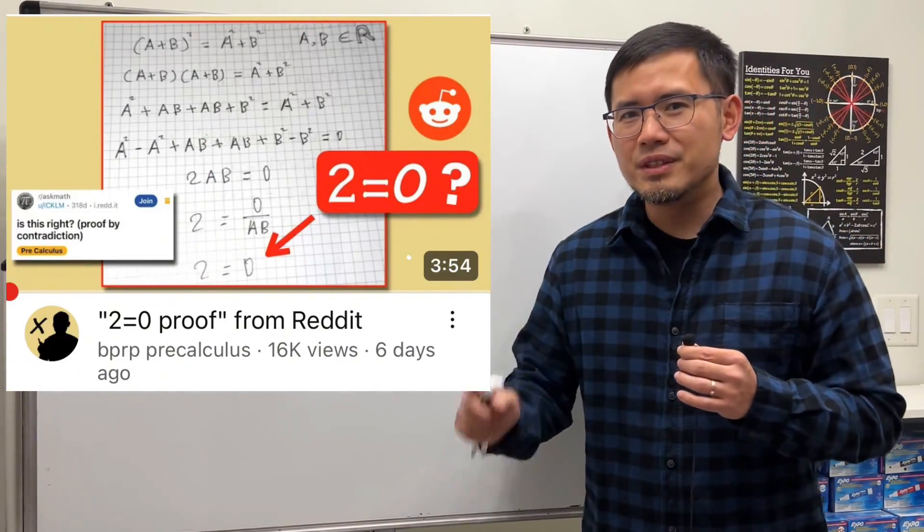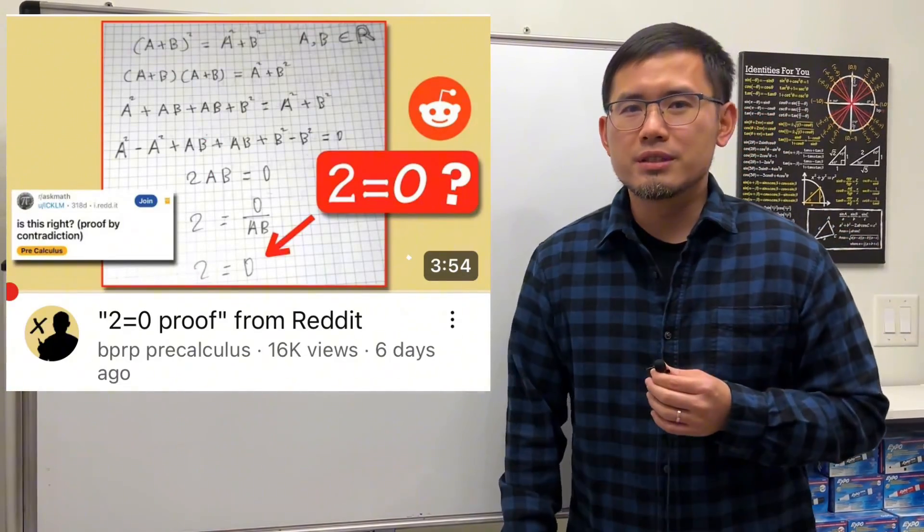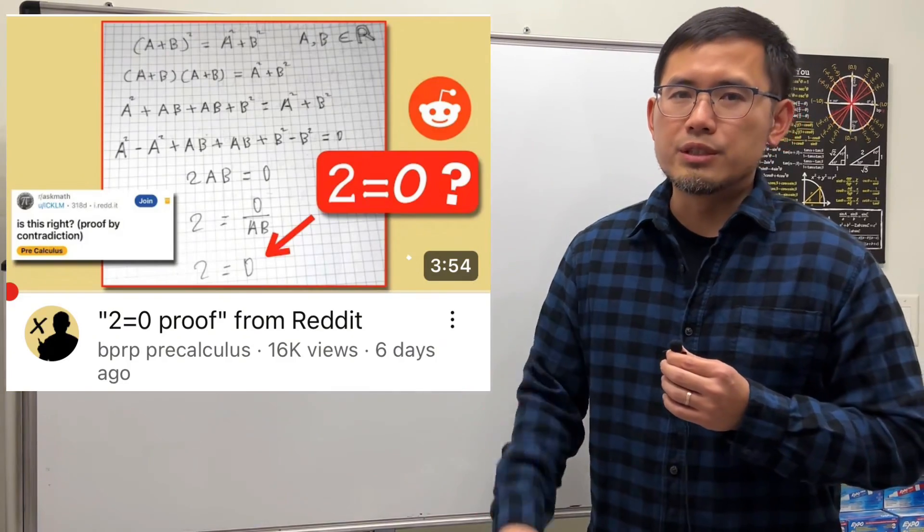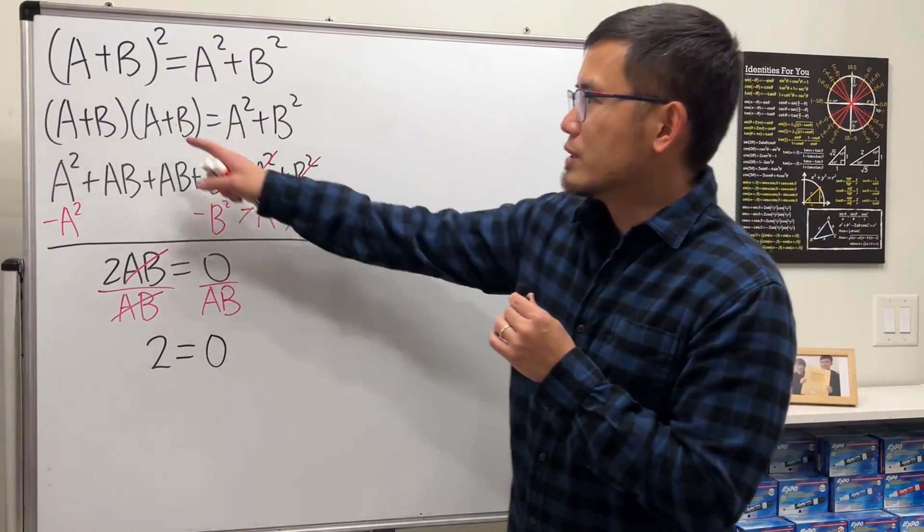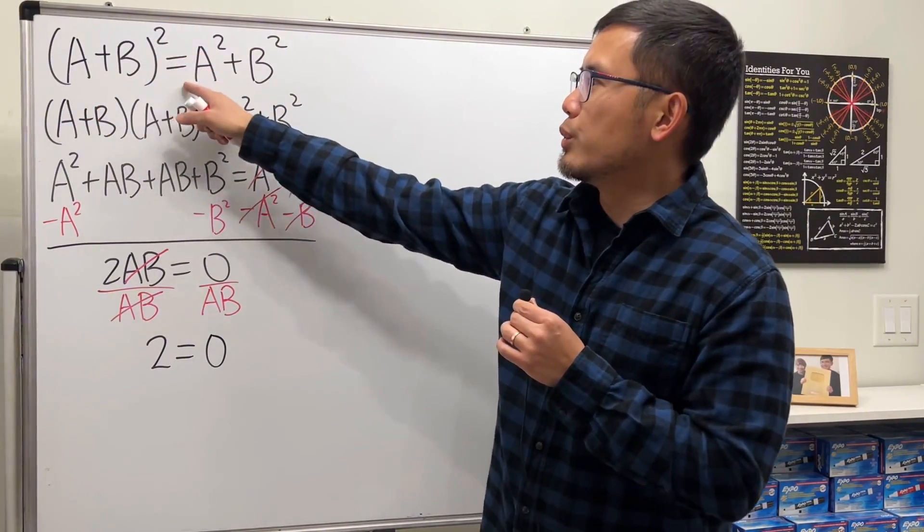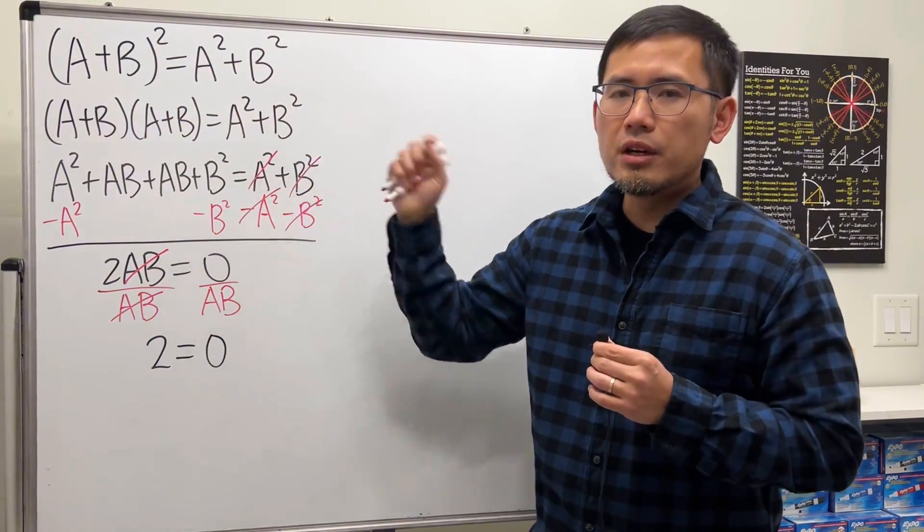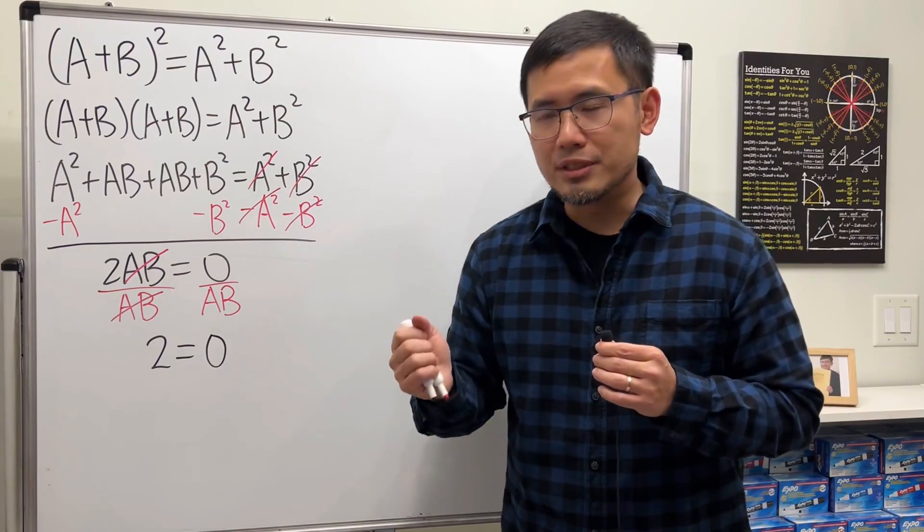A few days ago, I made this video, and I thought it was just a false proof that 2 is equal to 0, and I saw that on Reddit. And it goes like this. Start with this equation, a plus b squared is equal to a squared plus b squared, and here a and b are real numbers.